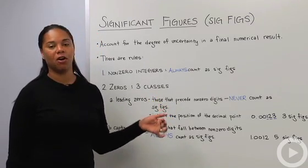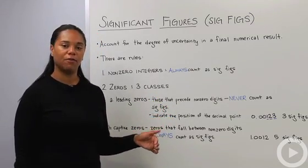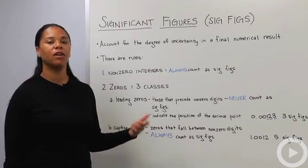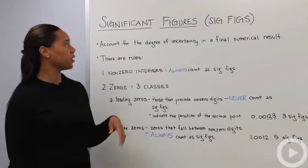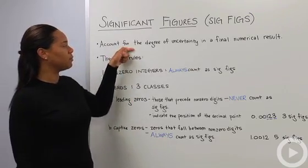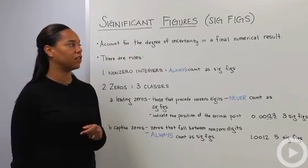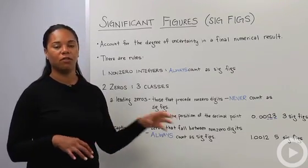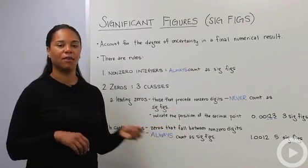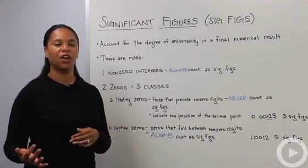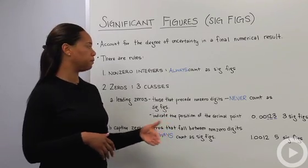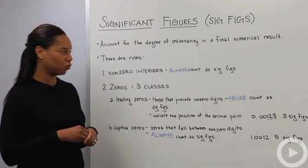The beautiful part about this is that there are actually some rules and very few exceptions, so with practice over and over it should become second nature for you. We do significant figures because we need to account for the degree of uncertainty in a final numerical result. So if you're in a laboratory and you've got measurements you want to add together to get a final result, you want to make sure your final result is as accurate as your initial measurements were. So let's start with the rules.